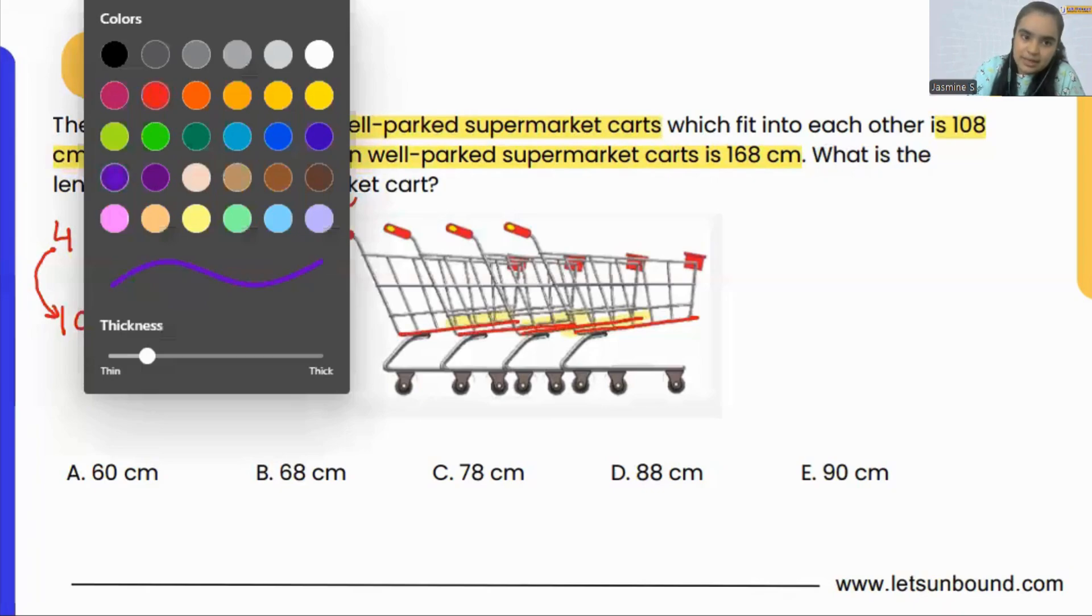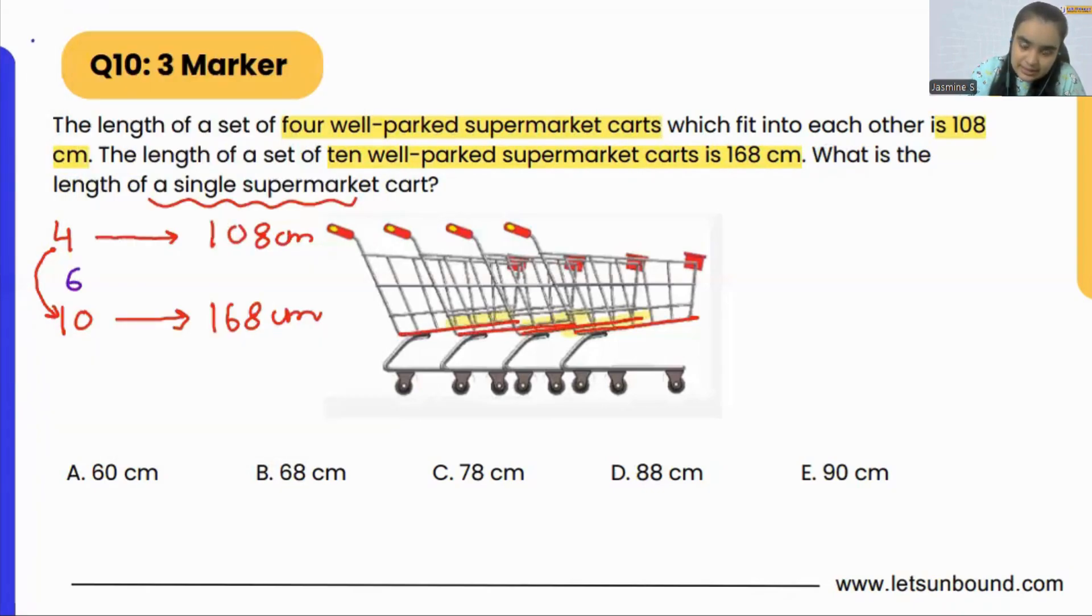From here, can we say that 6 plus 6 basically, will have 60 cm? From 4 to 10, we are adding 6. And 108 to 168, we got 60 more. We added 60 to it. So, that means 6 supermarket carts will have the length of 60 cm. That will add up the length of 60 cm.